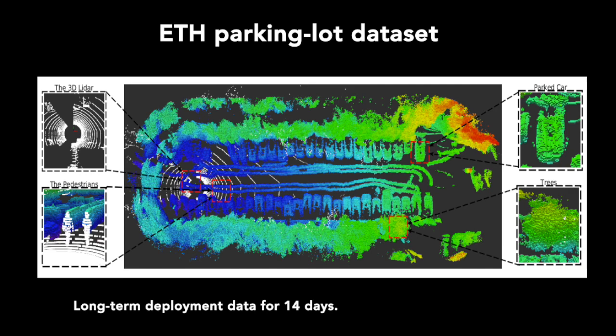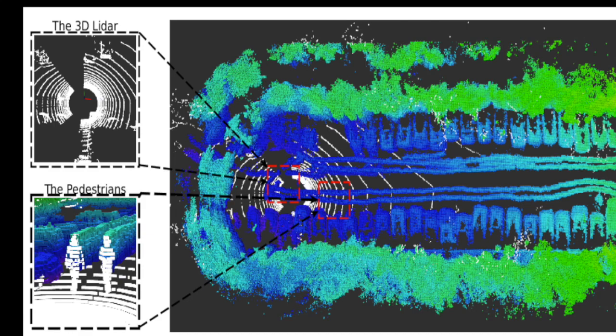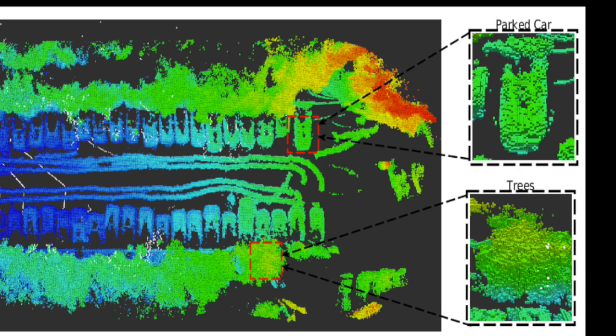The ETH parking lot dataset is used for training and validation in this research. In each session, there are pedestrians, cyclists, parked cars and trees.